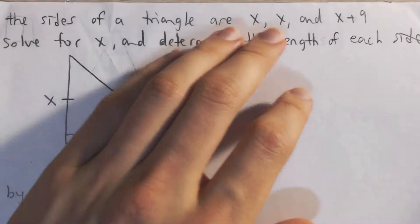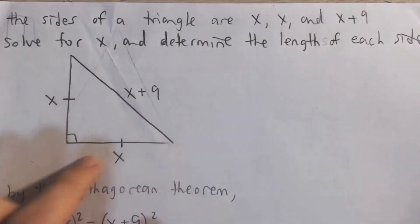The side lengths of a triangle are x, x, and x plus 9, just like given in this figure. And what we have to do is find the length of each side.